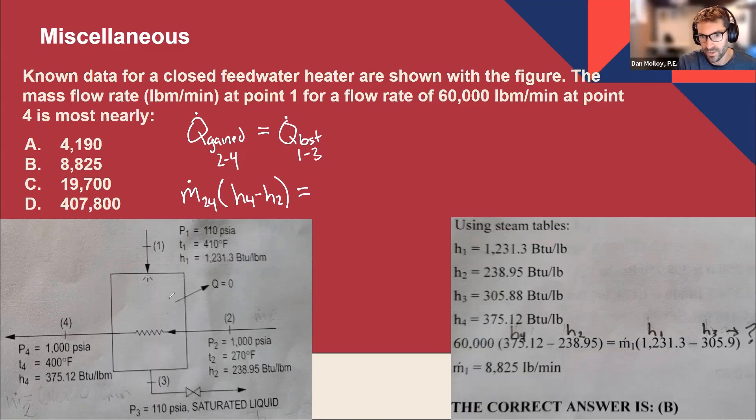And then the other side going from one to three, we have heat given up. So that's going to be M dot. I think the problem statement calls it M dot one. So I'll align with that just for simplicity, but I might've called it M13 to be extra clear. And that's the difference between H1 and H3.